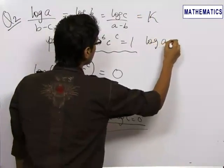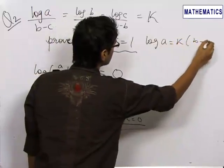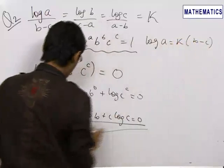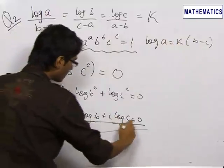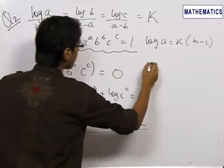So, log a equals k times b minus c. And we need to prove a log a plus b log b plus c log c. So, we multiply this log a by a.